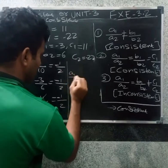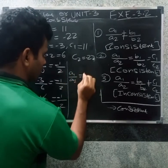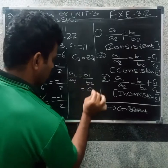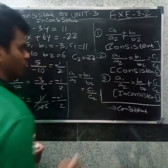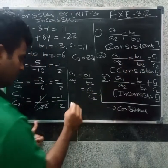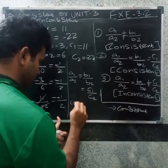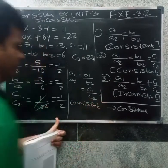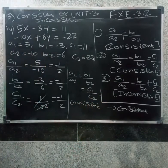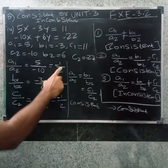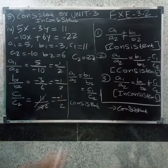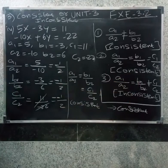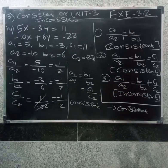So a1 by a2 equal to b1 by b2 equal to c1 by c2, all equal to minus 1 by 2. Since all three ratios are equal, this system is consistent.